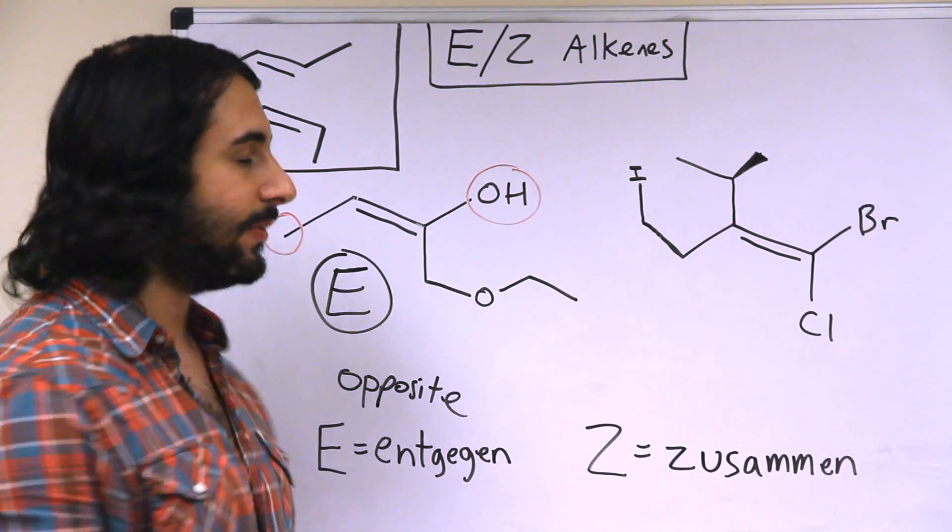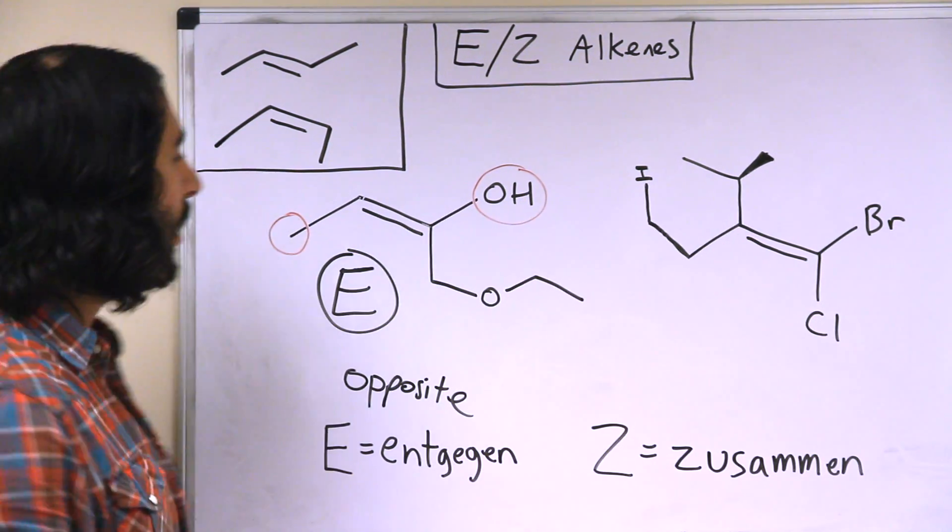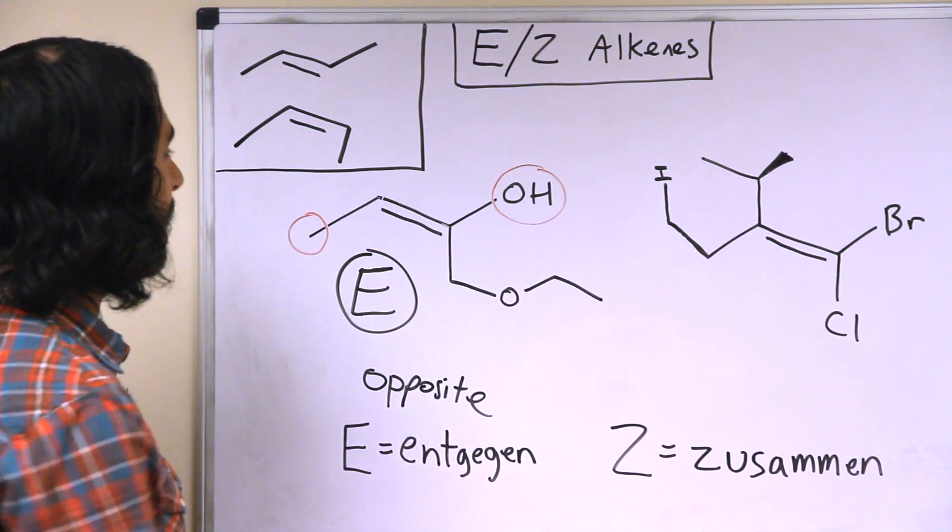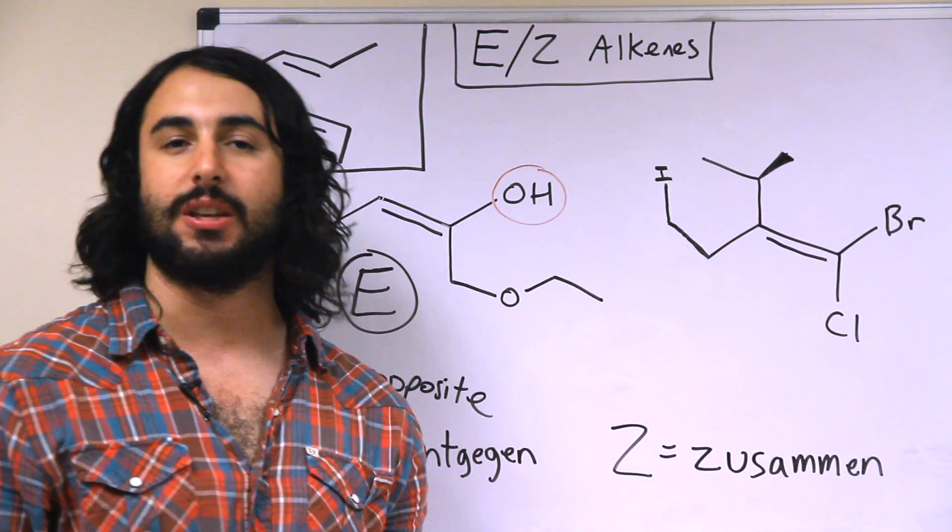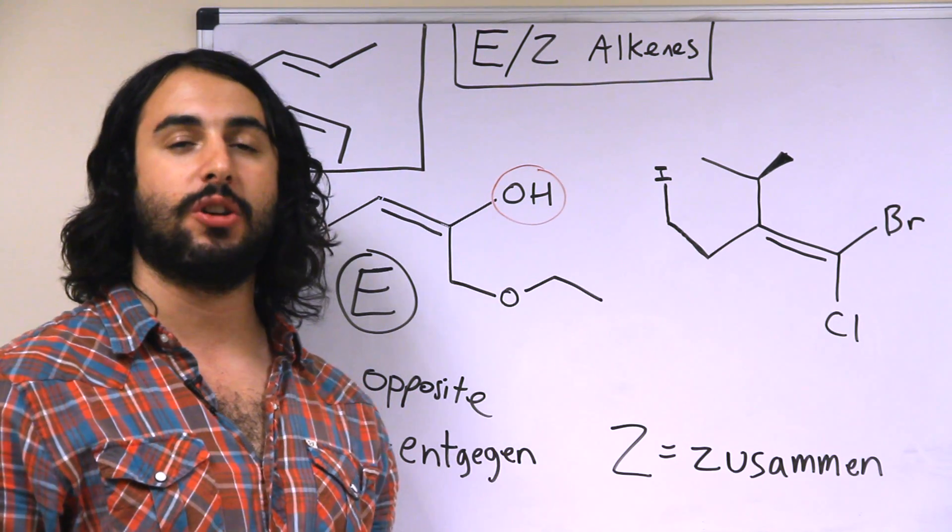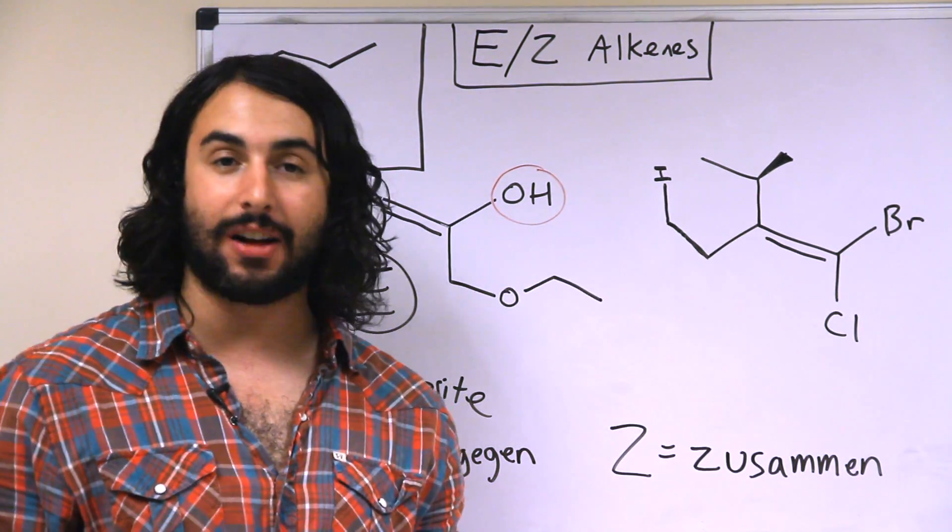So whereas for something like this we couldn't use cis and trans, because what would be cis and what would be trans? Well this group is trans to that, but this group is cis to that, so that becomes ambiguous terminology. But everyone could use the Cahn-Ingold-Prelog convention and agree that this is an E alkene.